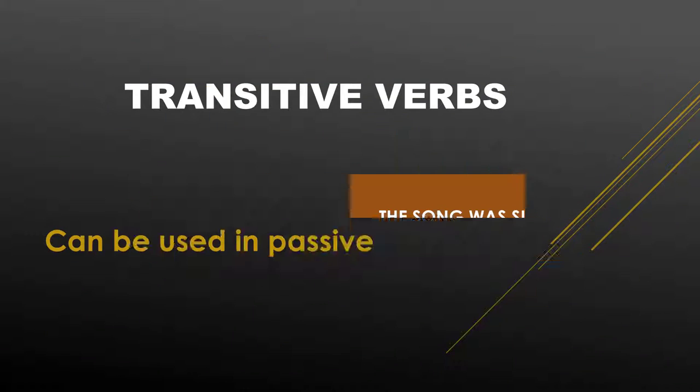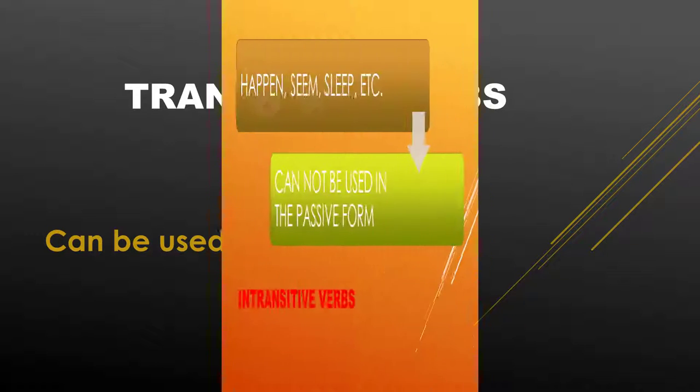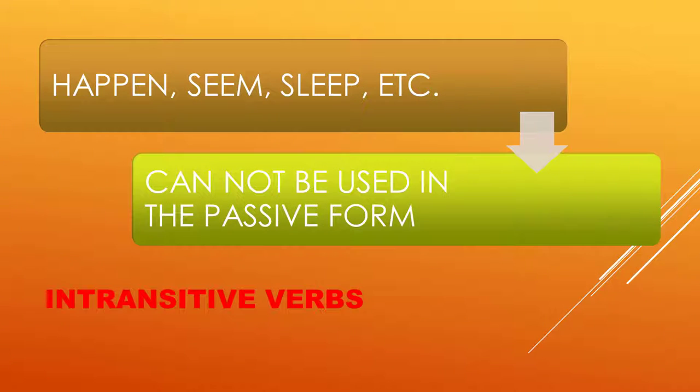Only transitive verbs can be used in the passive. Intransitive verbs such as 'happen,' 'seem,' and 'sleep' cannot be used in the passive form.